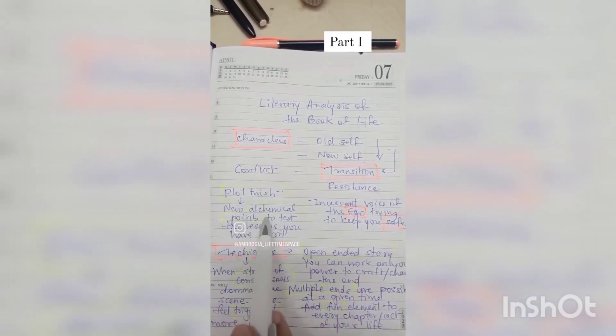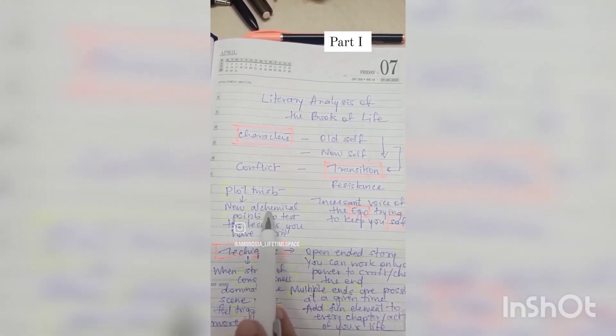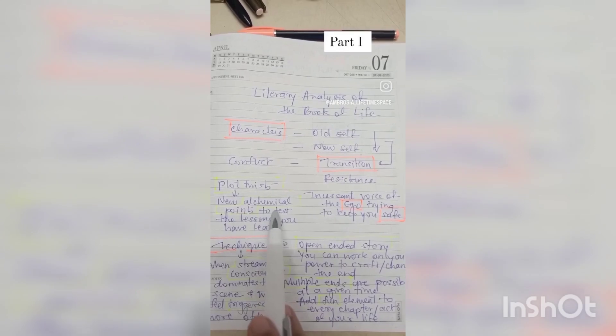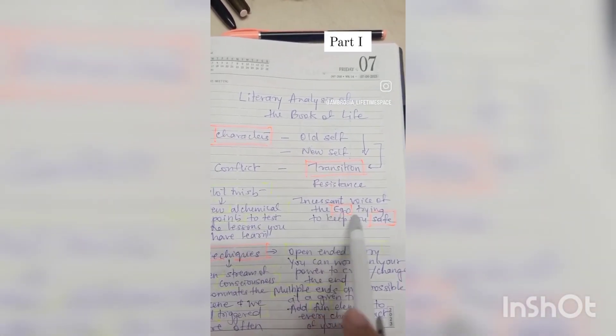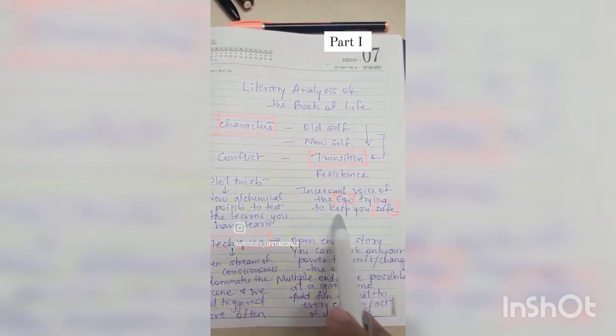What are plot twists? New testing points, alchemical points, points which can change the trajectory of your life. You can react differently to the challenges of life and that tests if you have learnt your lessons properly, and there will always be at the backdrop the incessant chatter of ego.